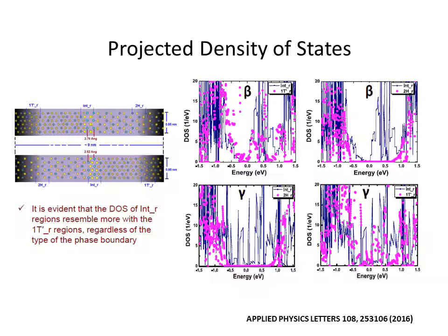The geometry optimized combined supercells are then used to calculate the electronic structures. To understand the electronic properties of the charge carrier transport at the phase boundaries, we define three different regions across the YZ plane. One situating exactly at the phase boundary, marked as int_R, and the other two are deep inside the 2H and 1T' regions, labeled as 2H_R and 1T'_R, respectively.